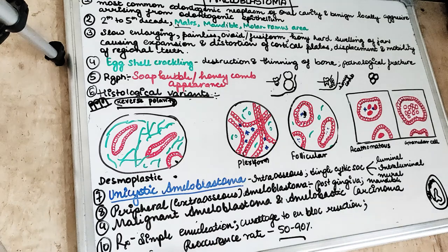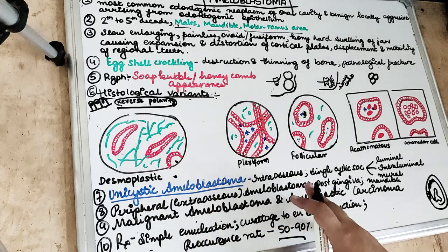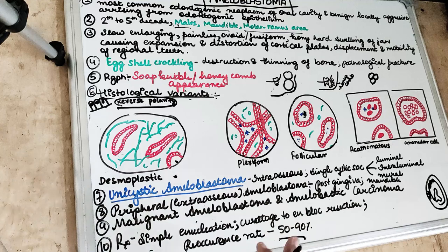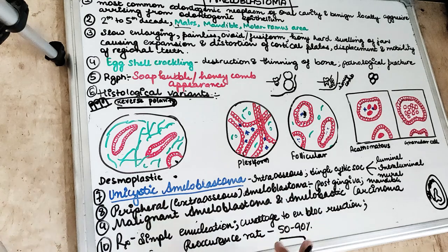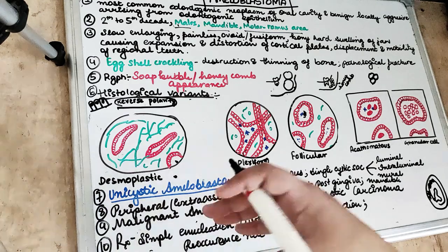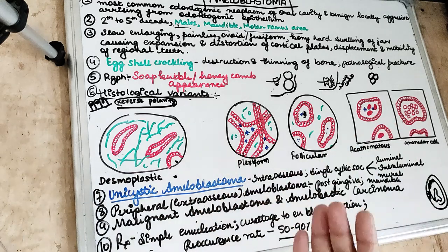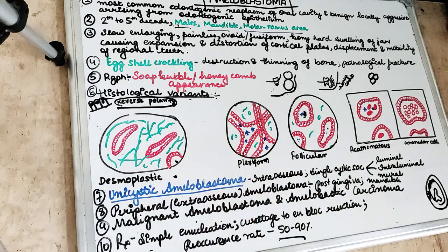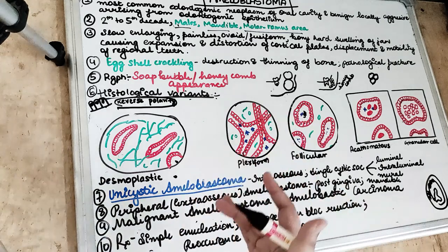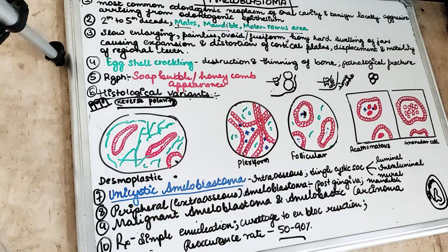Peripheral or extraosseous ameloblastoma is present on the gingival surface, posterior gingival and alveolar mucosa — more commonly in the mandible than maxilla. It is painless and non-ulcerated, presenting as a swelling in middle-aged persons. Malignant ameloblastoma shows histopathological features of ameloblastoma both in the primary tumour and in metastatic deposits, whereas ameloblastic carcinoma shows cytological features of malignancy in the primary tumour and in recurrence or metastatic deposits.